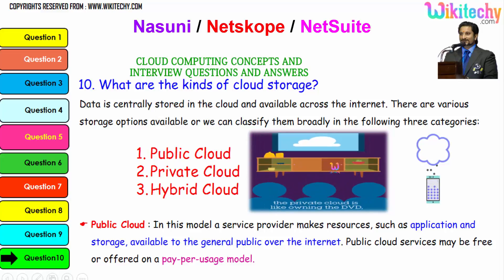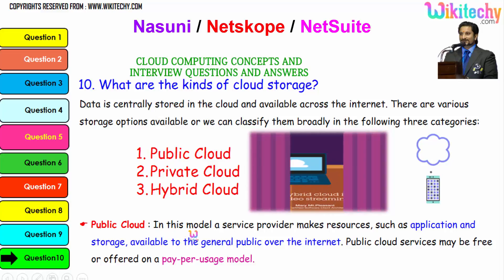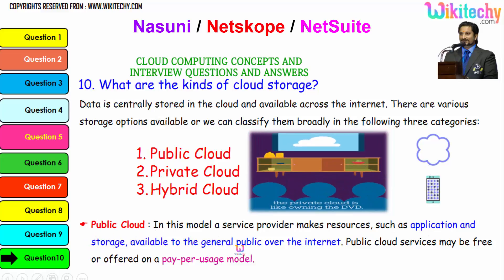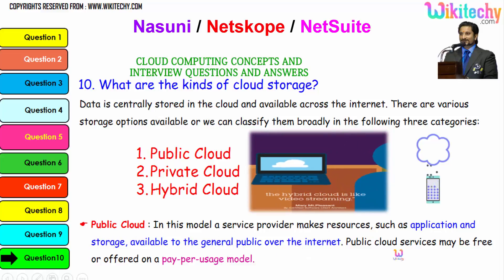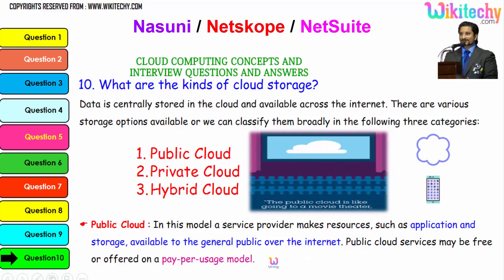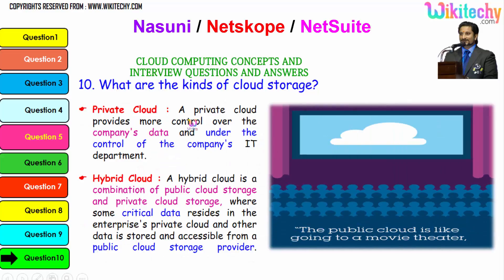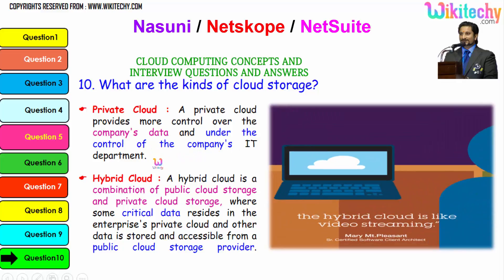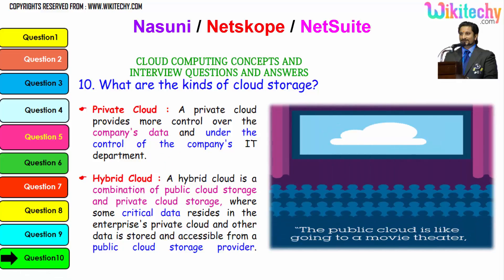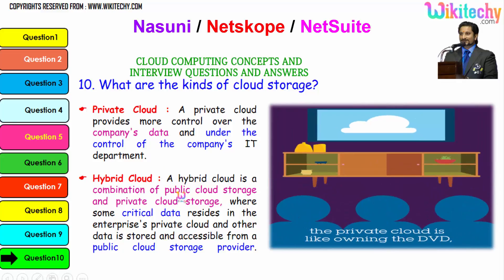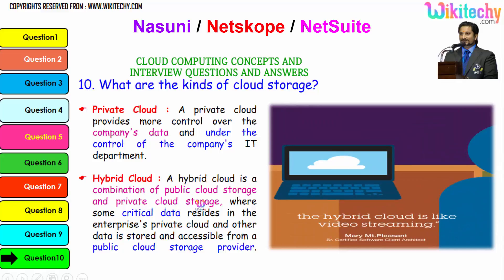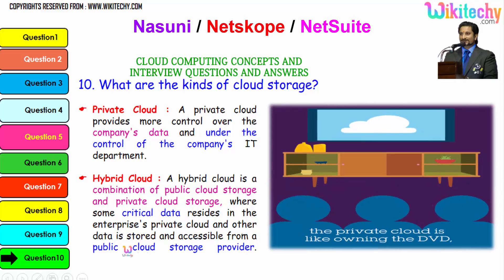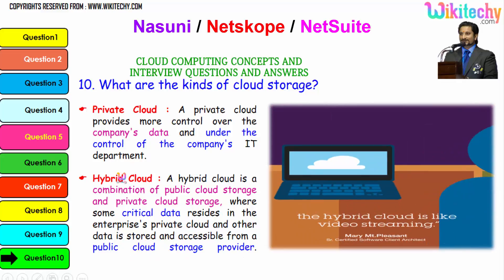In the public cloud model, a service provider makes resources such as applications and storage available to the general public over the internet. Public cloud services may be free or offered on a pay-per-usage model. Private cloud provides more control over the company's data and is under the control of the company's IT department — it's really private to you. A hybrid cloud is a combination of public and private cloud storage, where critical data resides in the enterprise private cloud and other data is stored and accessible from a public cloud storage provider.